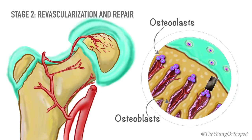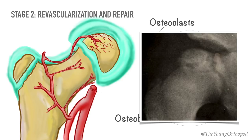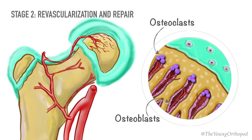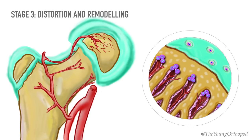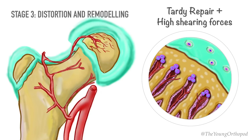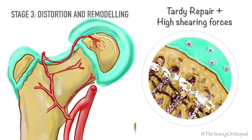Up to this stage, the condition is called Potential Perthes disease. That means if the repair process is rapid and complete, the bony architecture may be restored before the femoral head loses its shape. If the repair process is slow and shearing forces on the femoral head exceed the strength of the weakened subchondral bone, then subchondral fracture may occur and the bony epiphysis may collapse. Subsequent growth of the femoral head and neck will be distorted — this marks the clinical onset of true Legg-Calvé-Perthes disease.